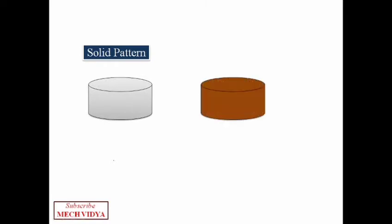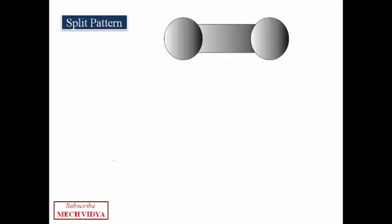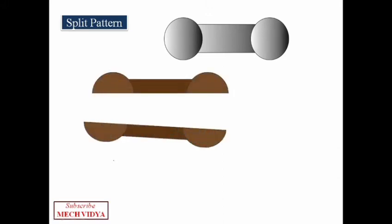Suppose we want to cast a very simple part like this, then a solid pattern can be used. But when the complexity of the part increases, then it is a better idea to go with split patterns. Here we divide the shape into two parts - one half in one molding box called the cope, while the other part goes in another molding box.